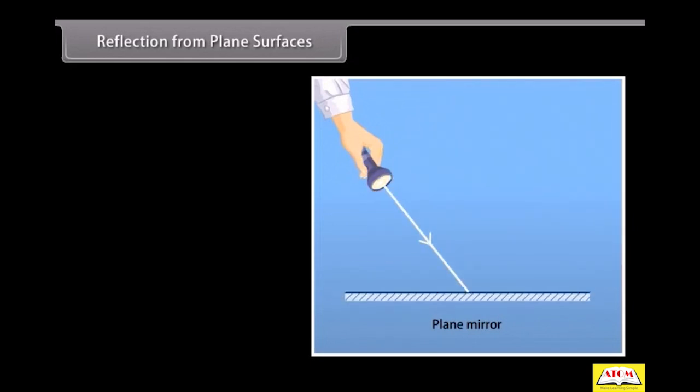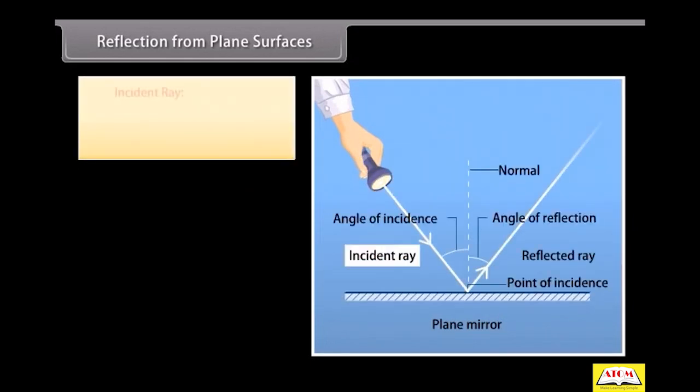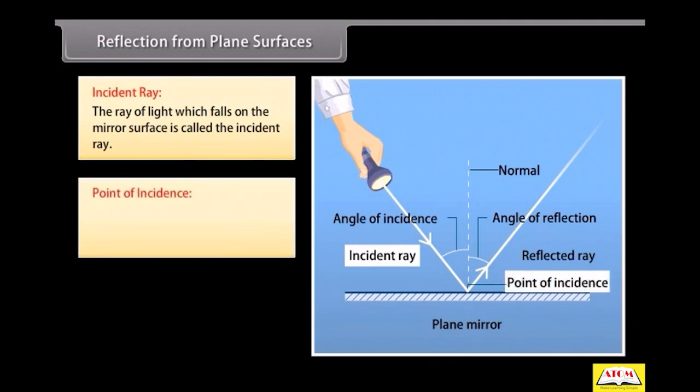Meaning of important terms are as follows. Incident ray: the ray of light which falls on the mirror surface. Point of incidence: the point at which the incident ray falls on the mirror.